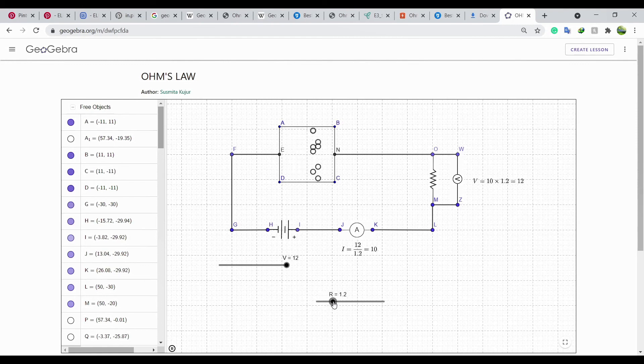Similarly, if the voltage is kept constant and resistance varies, the flow of current varies in inversely proportional manner and also the flow of electrons. This can be seen in simulation.